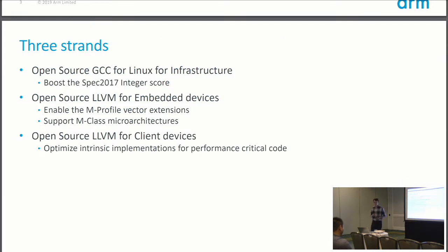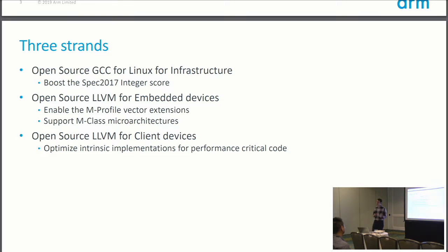The team that I lead works along three different strands. For GCC — which is the most important compiler for Linux — whenever we're looking at infrastructure and servers, we're looking at GCC performance, and the benchmark that matters there is SPEC 2017. For LLVM, we split across two strands. LLVM is important for embedded devices, primarily because it's the base for our commercial software. We help by enabling new mProfile architectures and ensuring support for Cortex-M microarchitectures like Cortex-M3, M4, and M33.